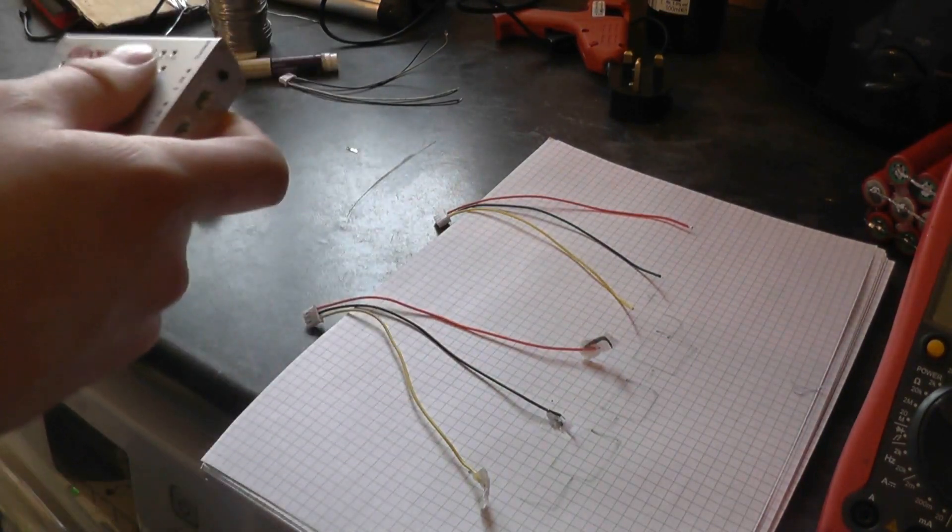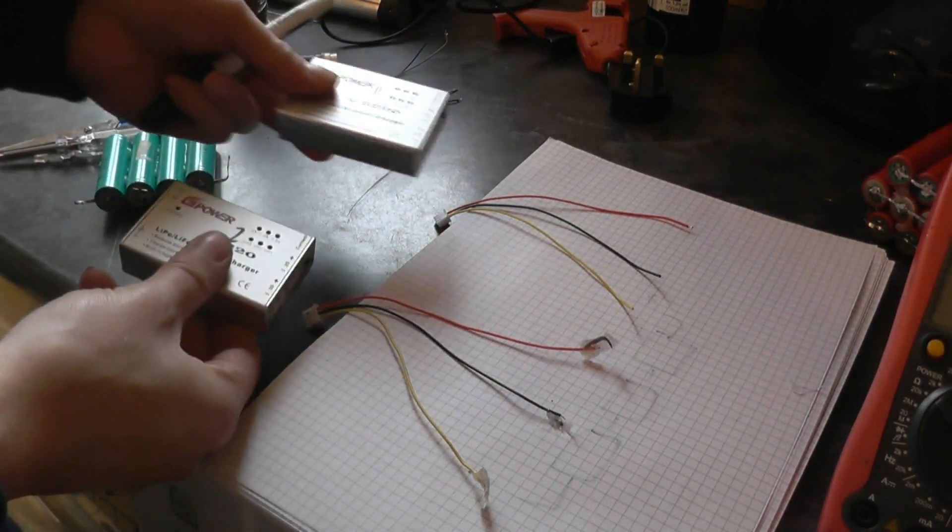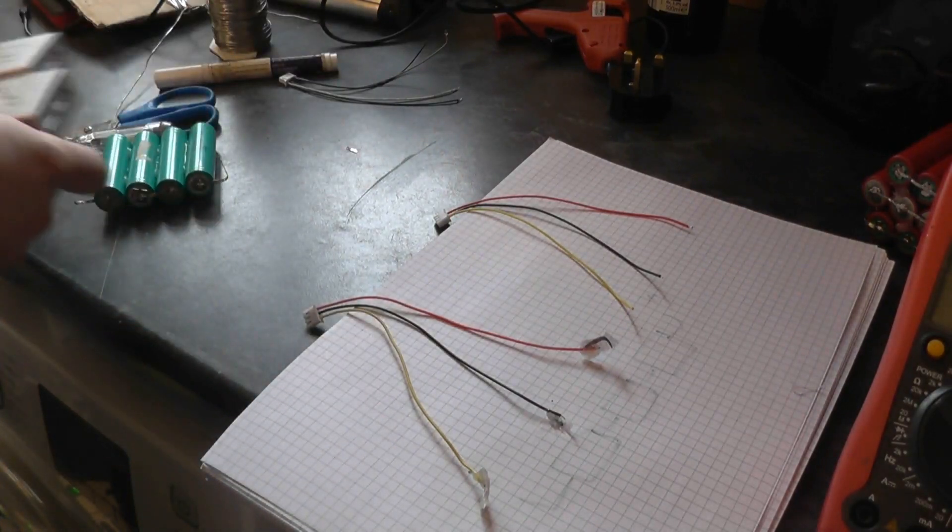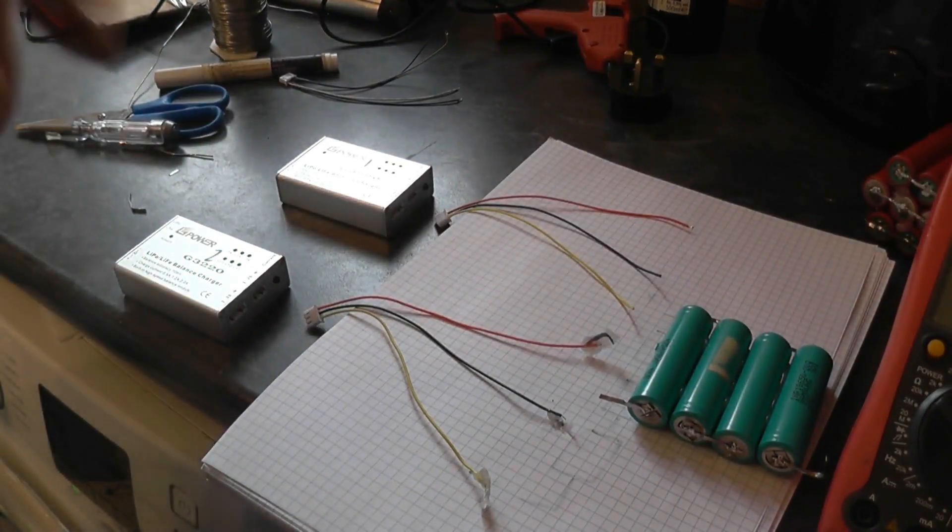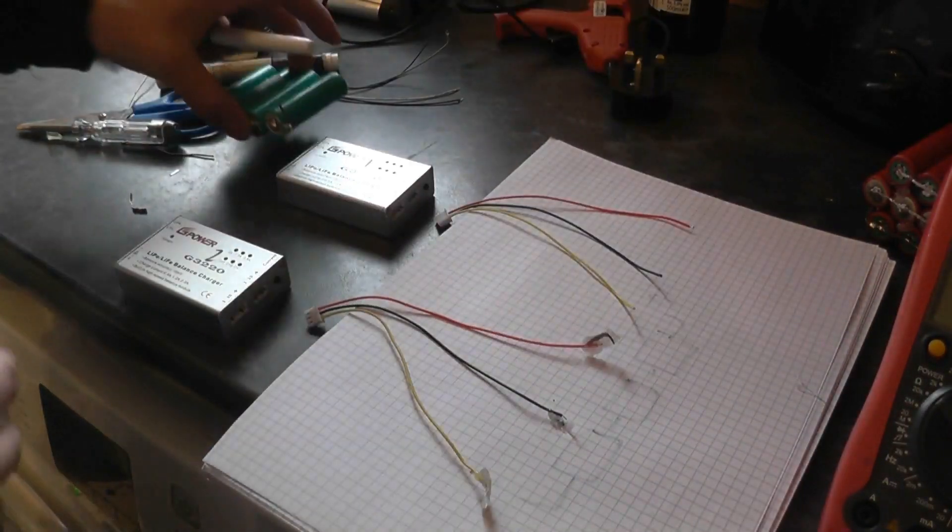My crazy idea is using two of these units, charging 2 cell packs, to charge a 4 cell pack. Now I haven't added any balance leads because I'm just going to draw this out quickly.